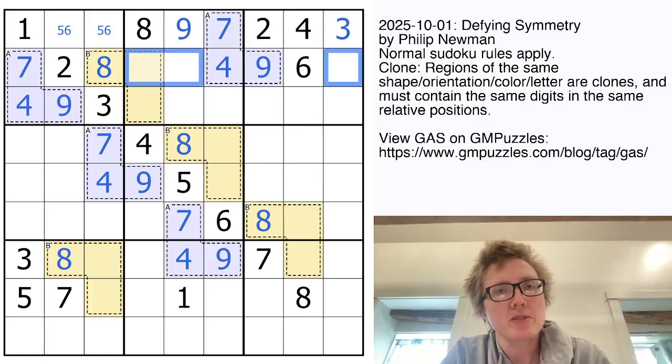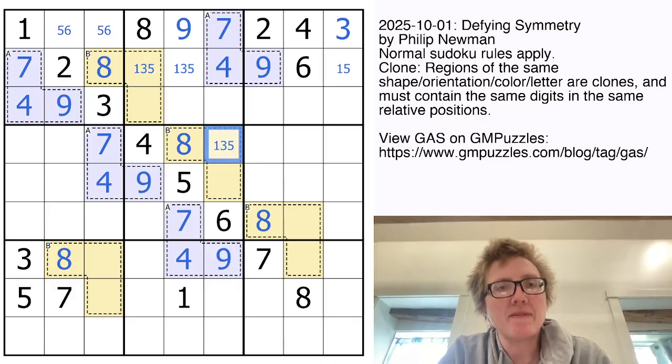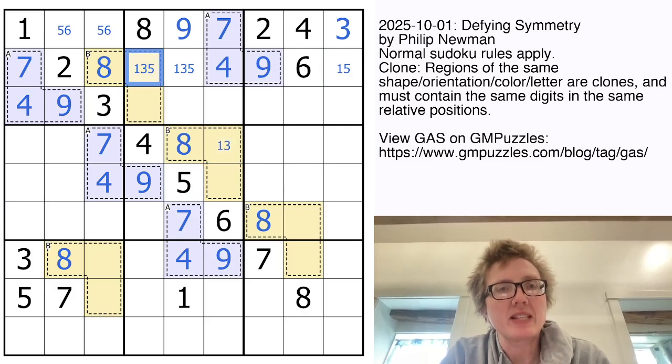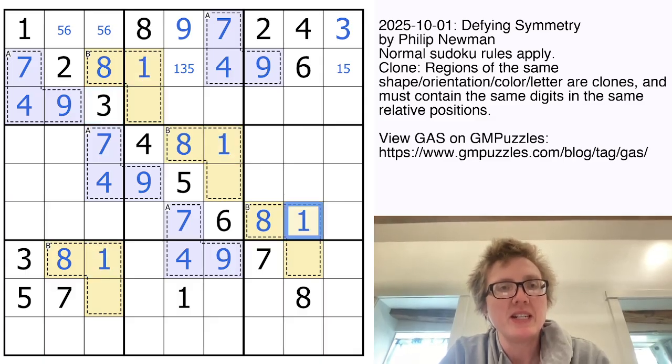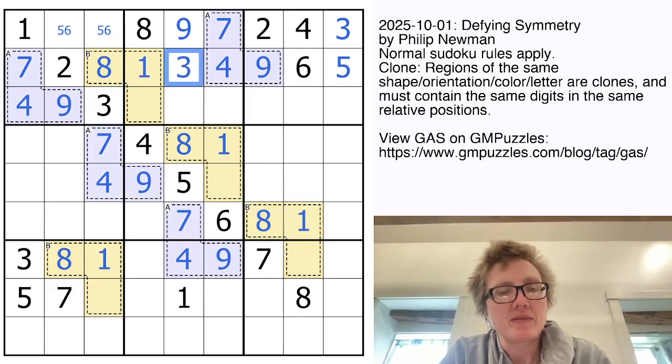Now what can we do for this cell? Let's look at this row first. So we need a one, three, and five. That can't be a three. So we know that this is either a one, three, or five. It's not a five because there's a five in this region. So that is either a one or a three. And because here it sees a three, we know it actually does have to be a one.